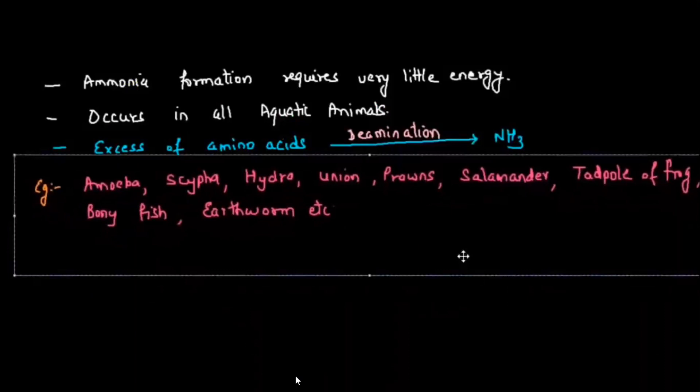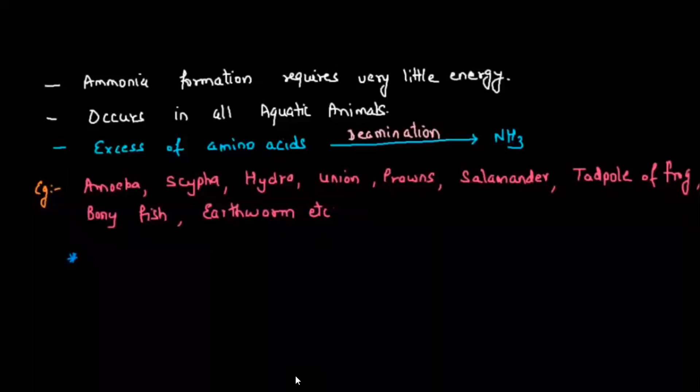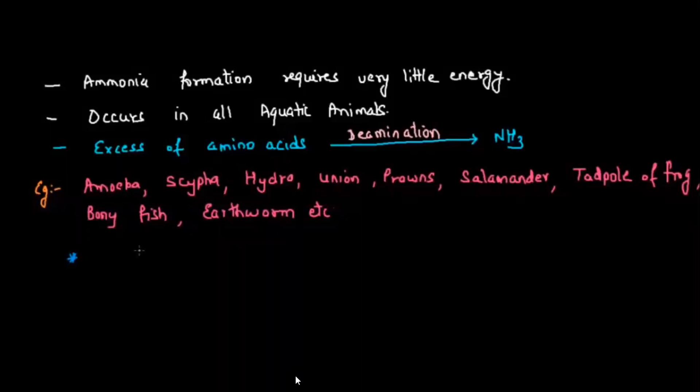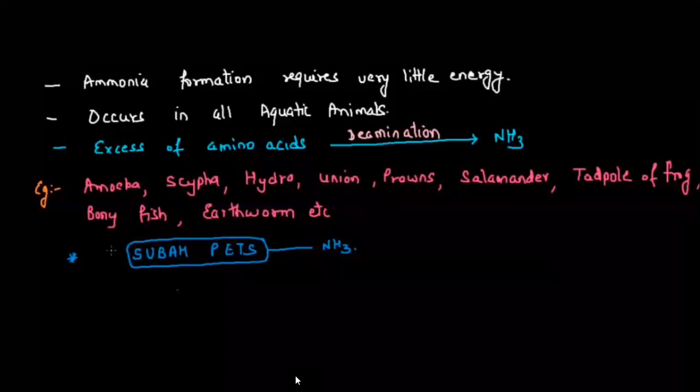A shortcut to remember ammonotelism examples is 'SUBAHPETS': S for Sypha, U for Unio, B for Bonefish, A for Amoeba, H for Hydra, P for Prawns, E for Earthworm, T for Tadpole, and S for Salamander.